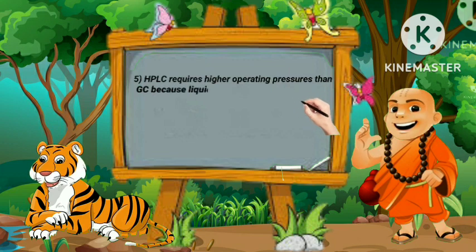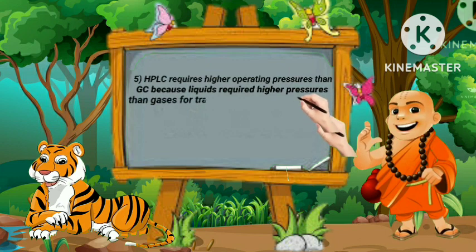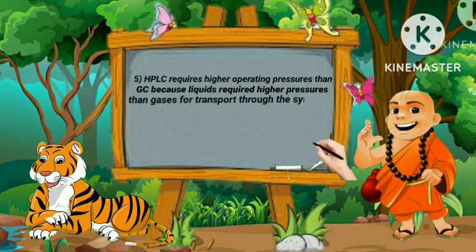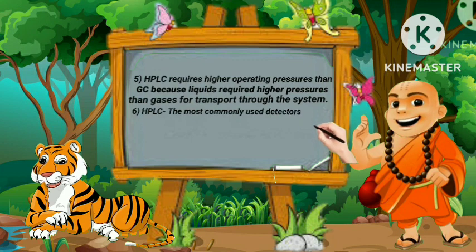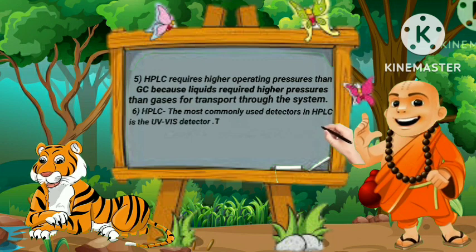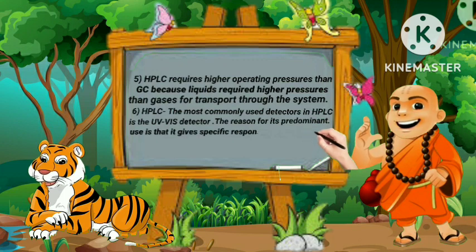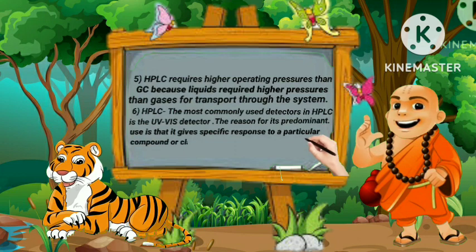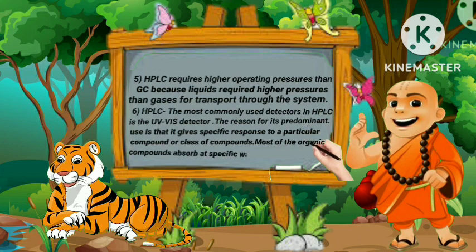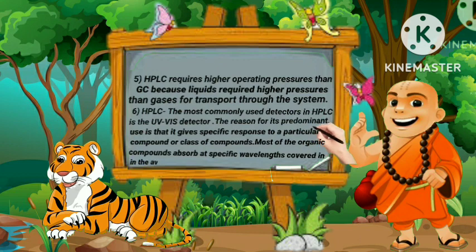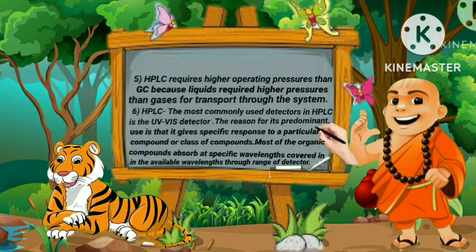HPLC requires higher pressures than GC because liquids require higher pressure than gases for transport through the system. Sixth, the most commonly used detector in HPLC is the UV-visible detector. It gives a specific response to a particular compound or class of compounds, as most organic compounds absorb at specific wavelengths covered in the available wavelength range of detectors.